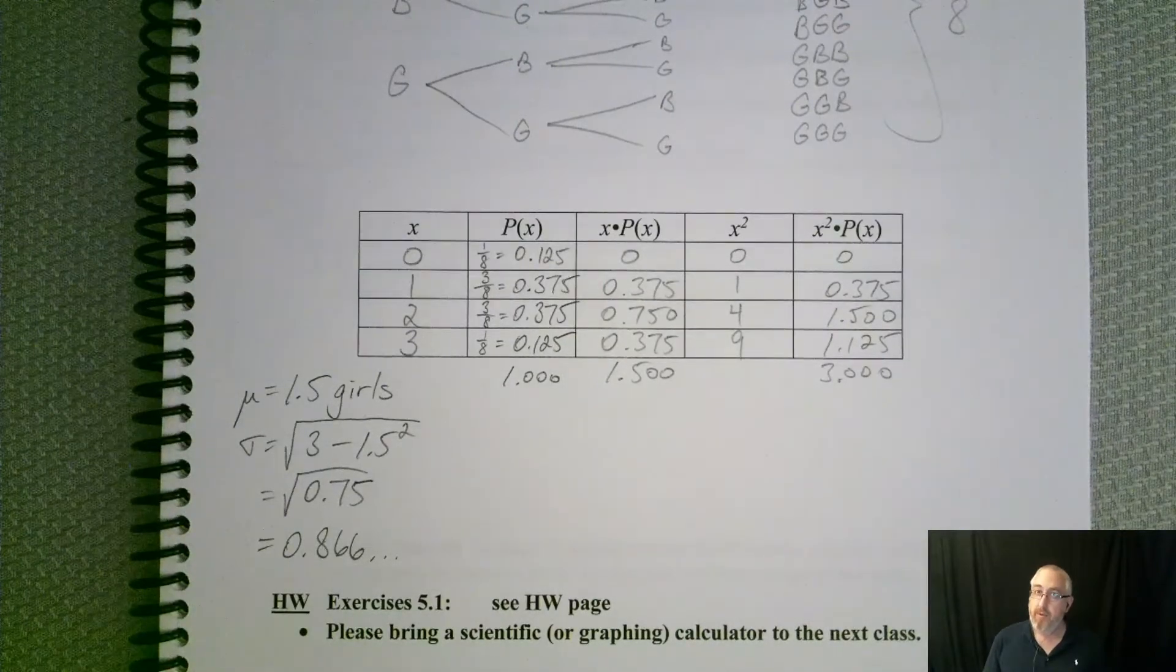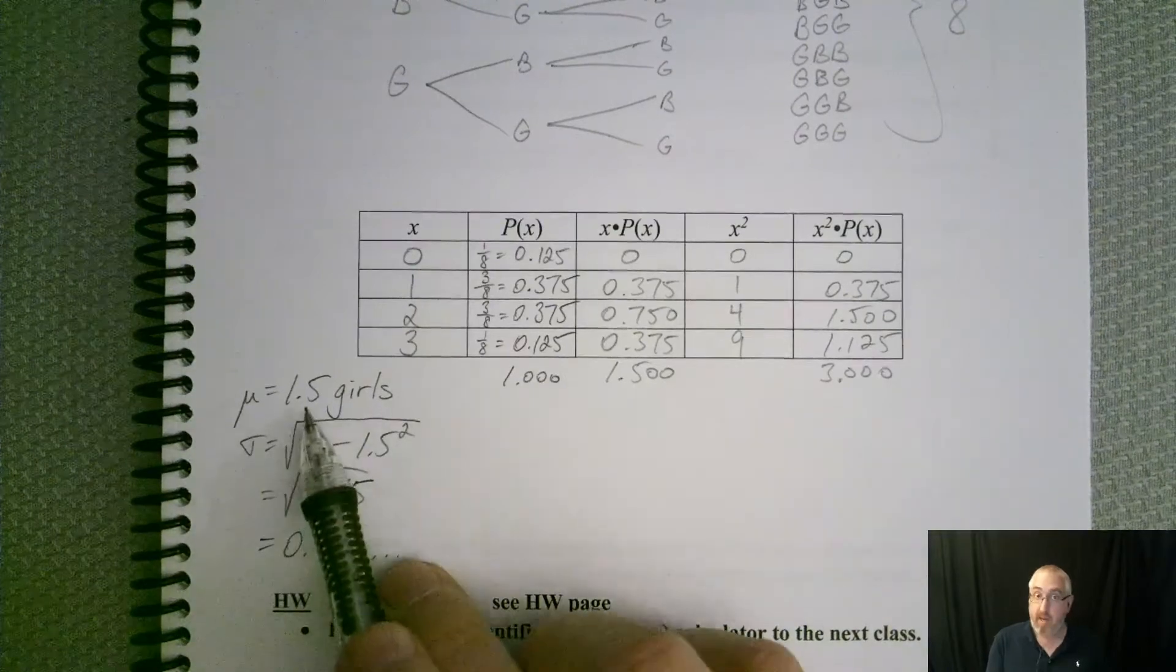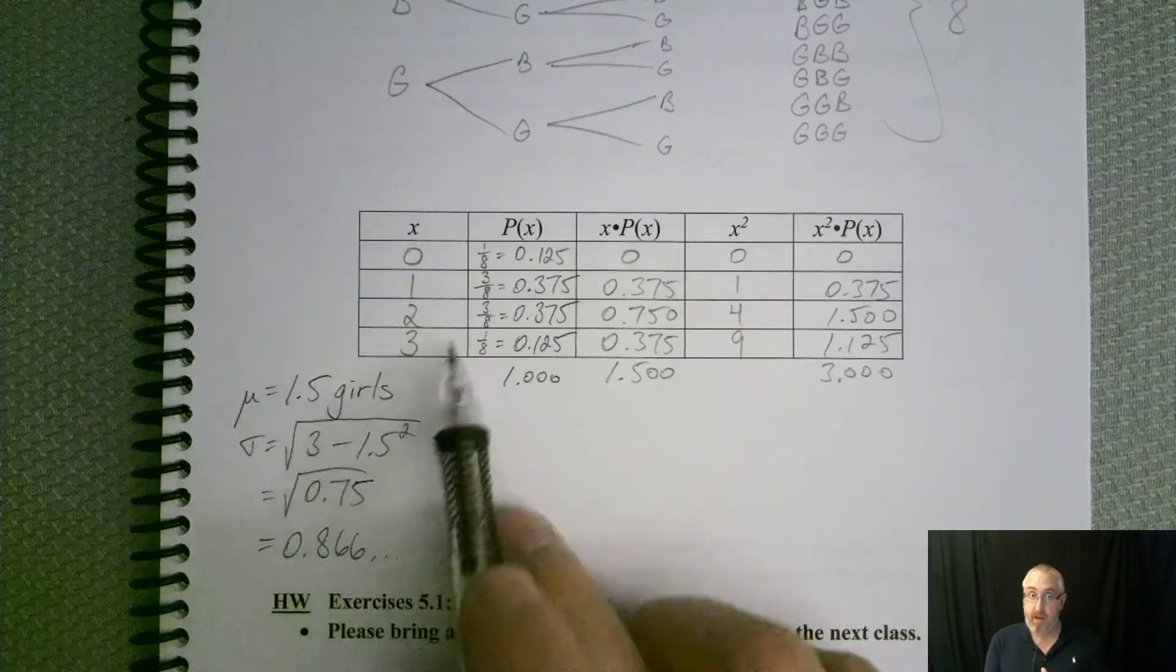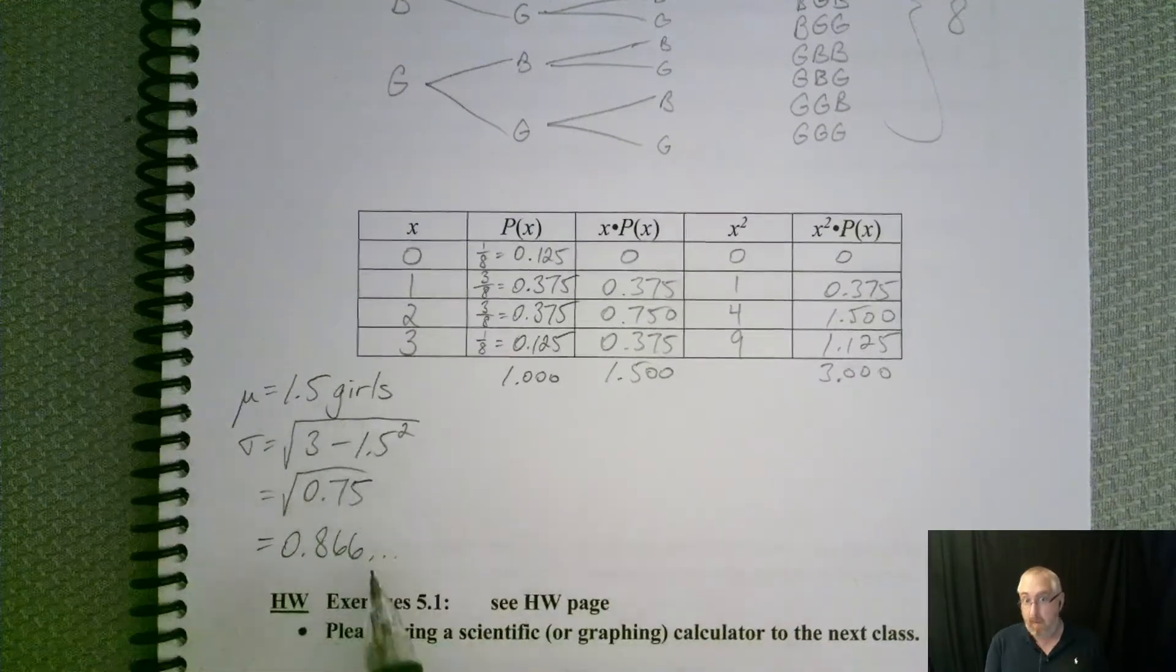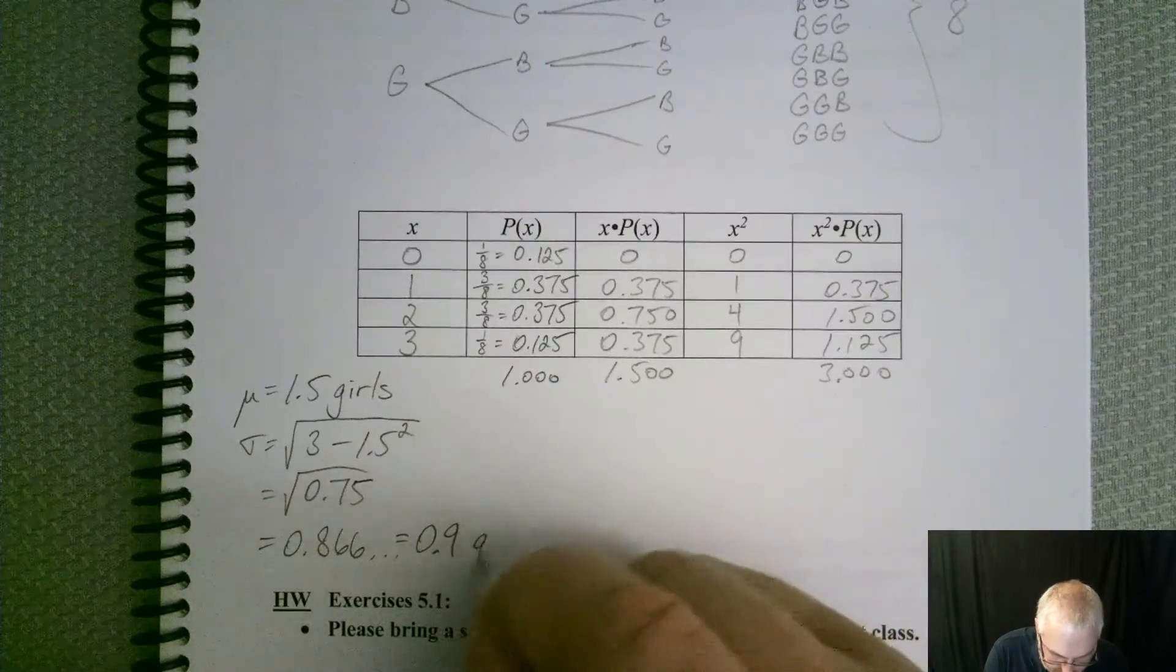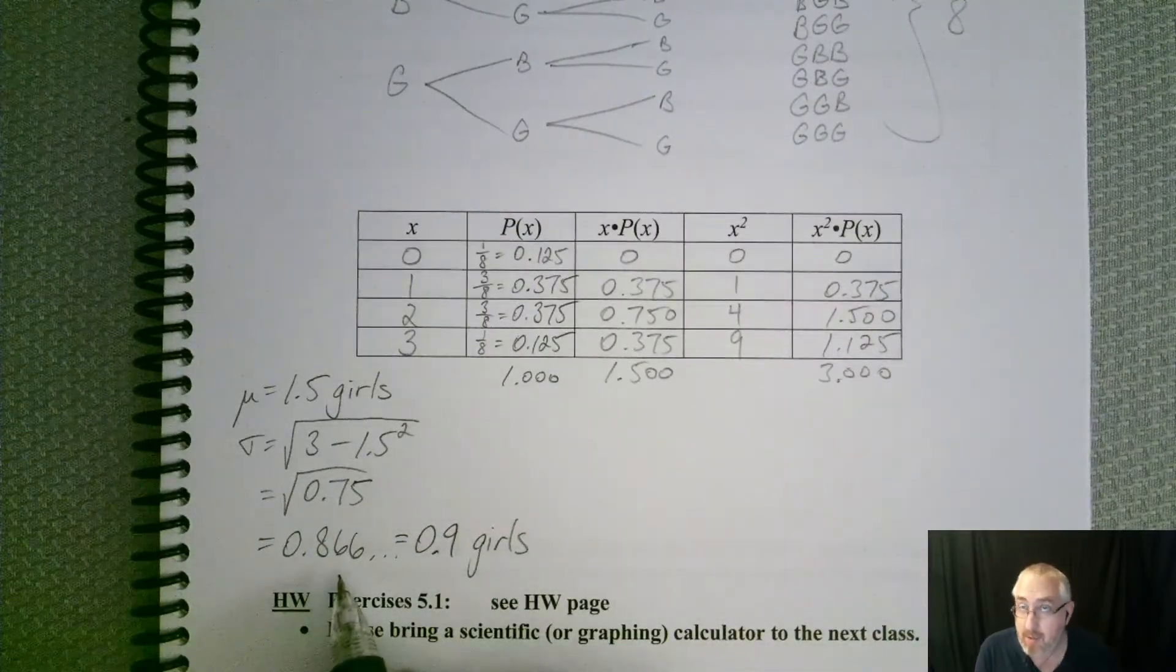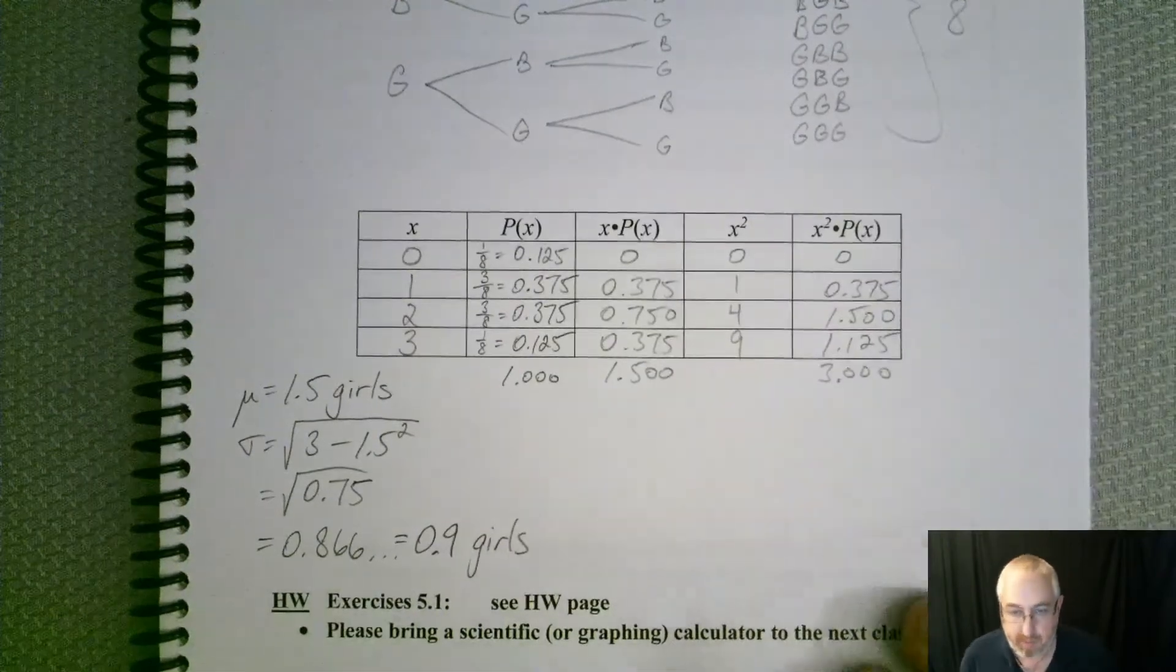Well, what do we want to round this to? Now our mean is 1.5, and that's okay. It's one extra decimal place than our data, so definitely one decimal place is good. If we wanted to round this to one decimal place, why not? Let's make life easier for us. So 0.9 girls. Now if you said 0.87 girls, I would certainly take that as well.